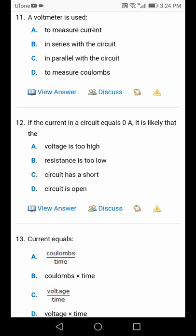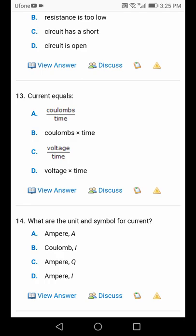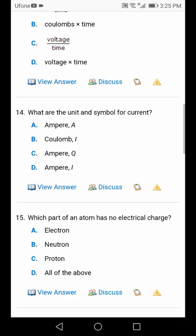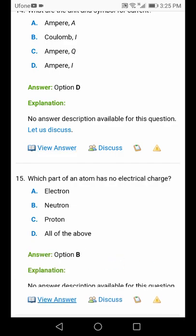If current is zero, it means that the circuit is open. If current is zero, the circuit will be open. Short circuit will have maximum current. Q is equal to I times T. I is equal to Q by T, option number A.